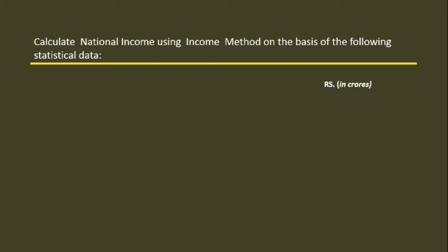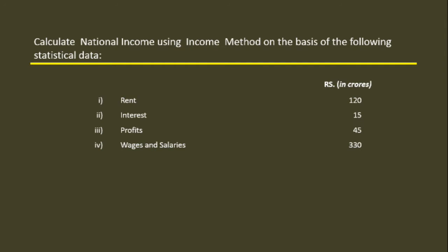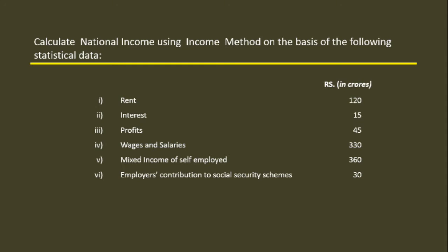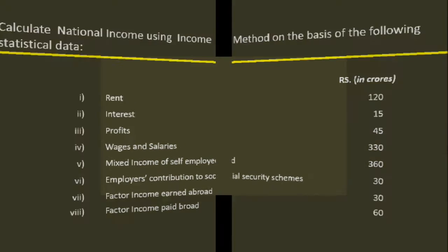Values are given in crores. Rent: 120 crores. Interest: 15 crores. Profits: 45 crores. Wages and salaries: 330 crores. Mixed income of self-employed: 360 crores. Employer's contribution to Social Security Scheme: 30 crores. Factor income earned abroad: 30 crores. Factor income paid abroad: 60 crores.